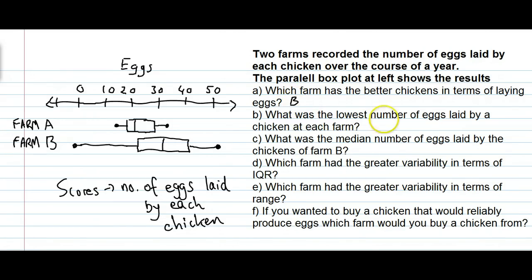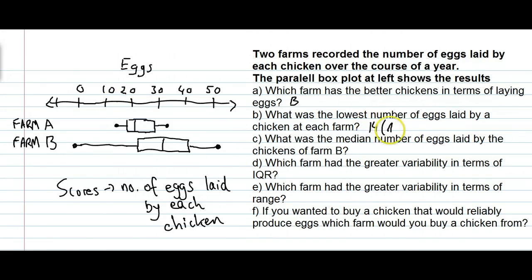Question B: what was the lowest number of eggs laid by a chicken at each farm? At farm A, we look to the minimum to find the lowest number of eggs laid. There must have been a chicken that laid that many eggs to produce that minimum. That corresponds to about 14 for farm A. For farm B, the lowest number of eggs was actually zero.